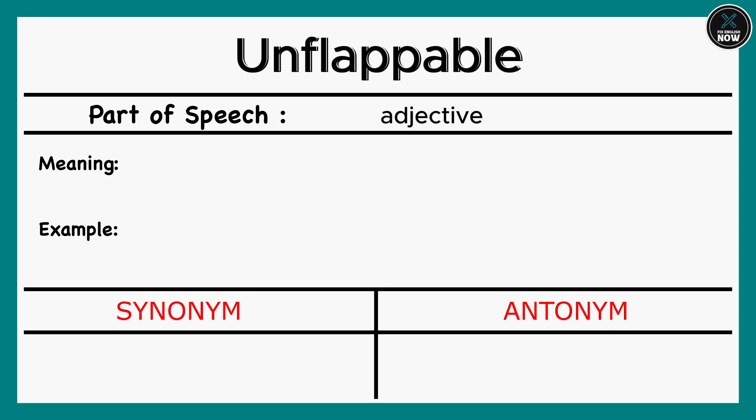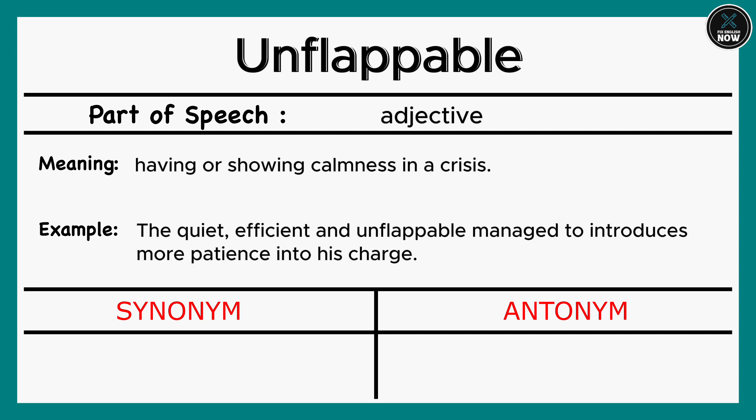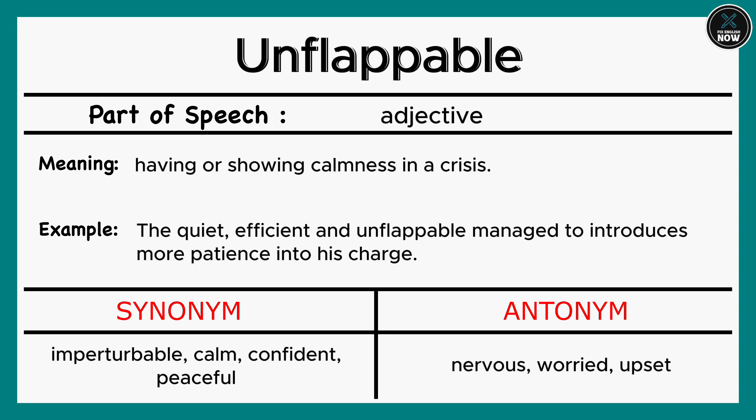Unflappable: Having or showing calmness in a crisis. Example: The quiet, efficient, and unflappable manager introduced more patience into his charge. Synonyms: Imperturbable, Calm, Confident, Peaceful. Antonyms: Nervous, Worried, Upset.